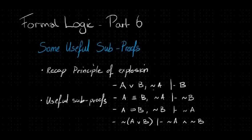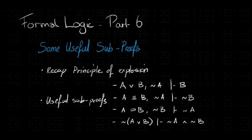The four sub-proofs are: A or B, not A, therefore B; A if and only if B, not A, therefore not B; A then B, not B, therefore not A; and not A or B, therefore not A and not B. Once I've done that I'll look at a proof and see how knowing these useful sub-proofs allows us to just pop them in whenever we want whenever we've got the requisite parts, and they're really going to help us make progress. Finally, I'll talk a little bit about how we can reduce the number of steps in our proofs — thinking of ways we can make our proofs more elegant.